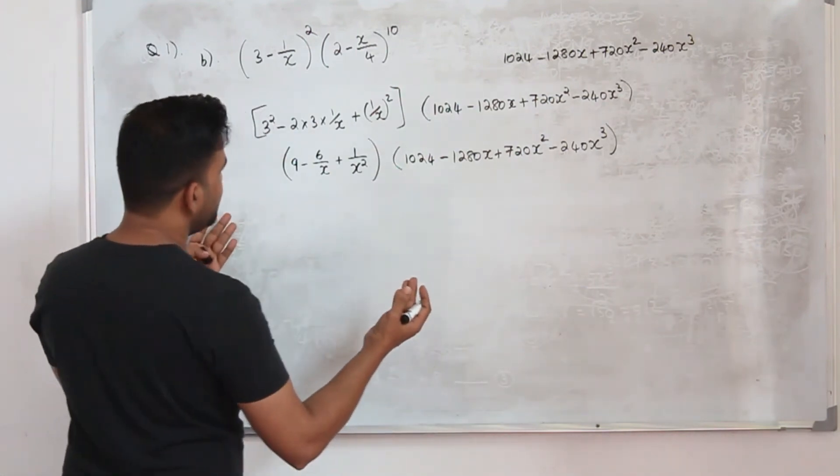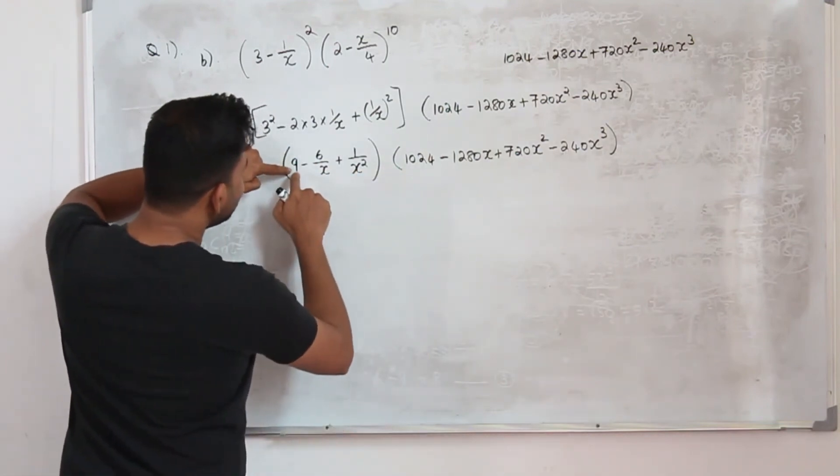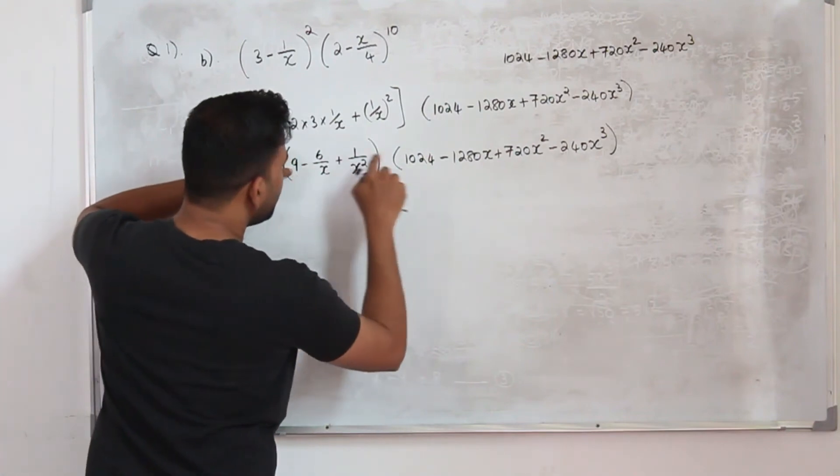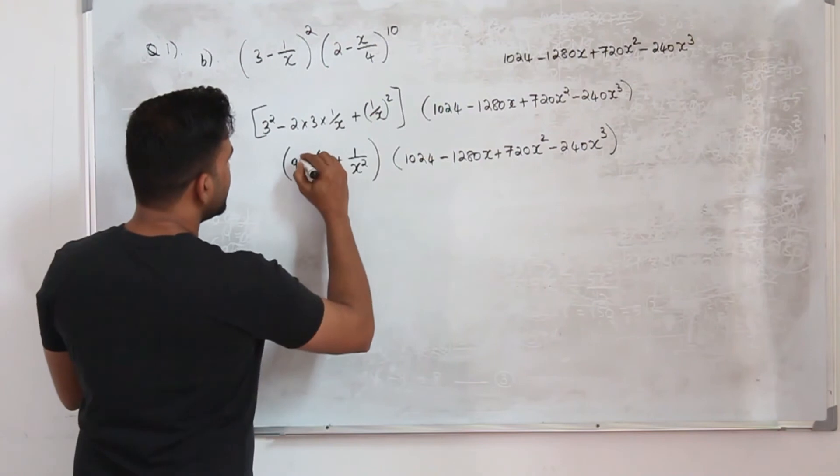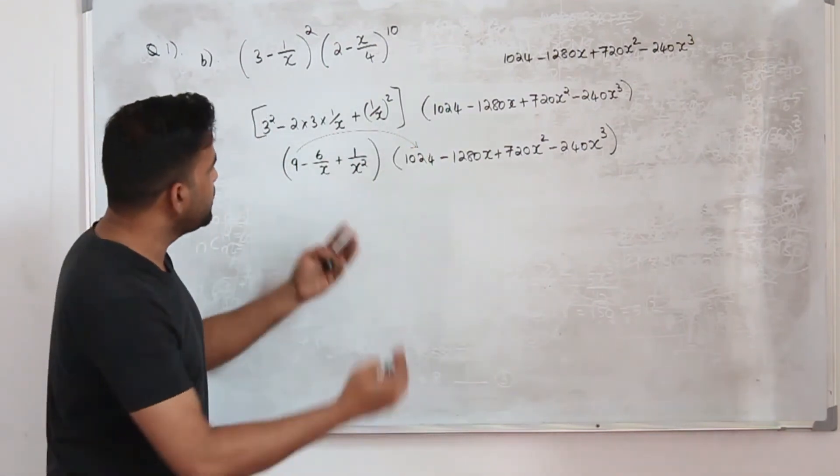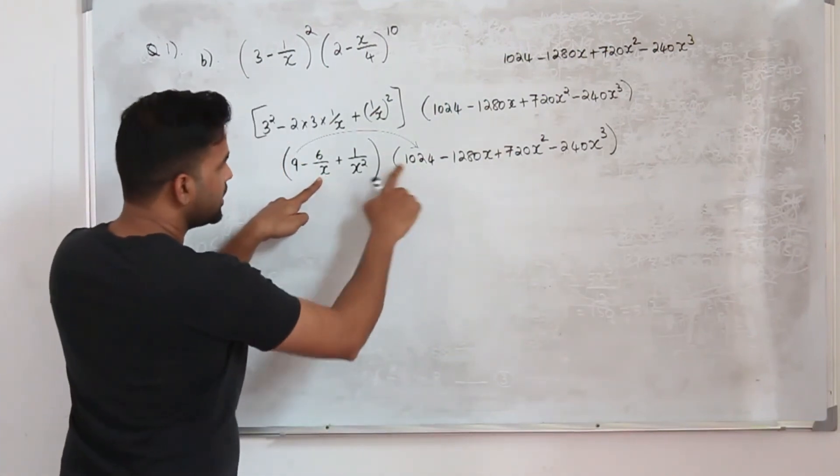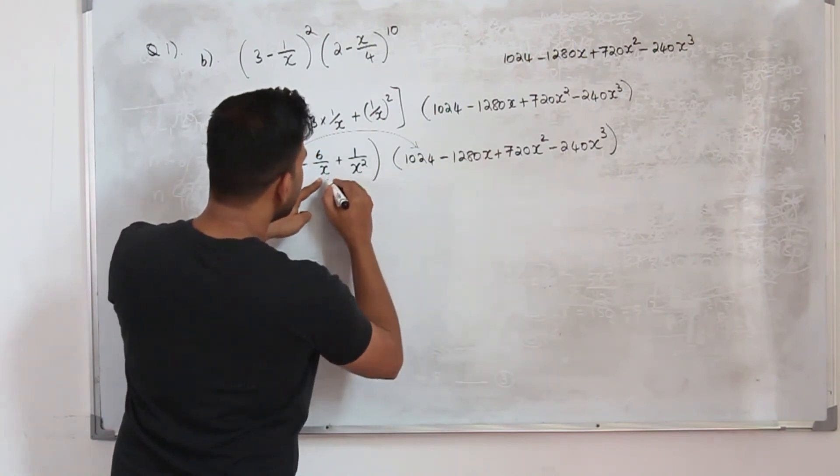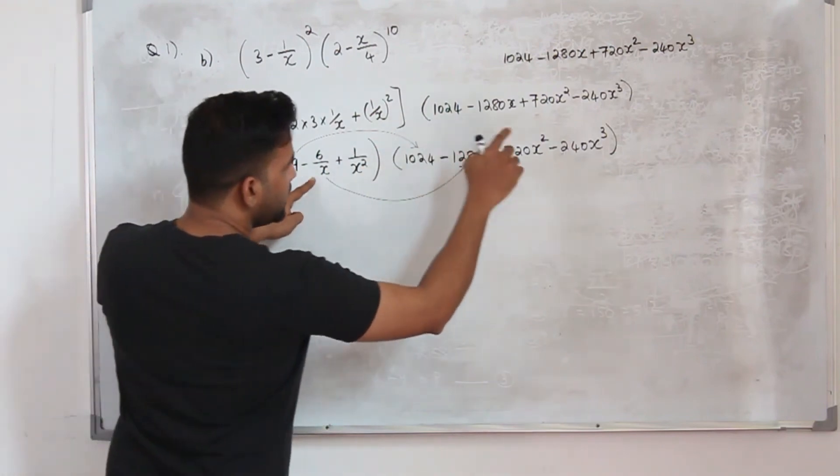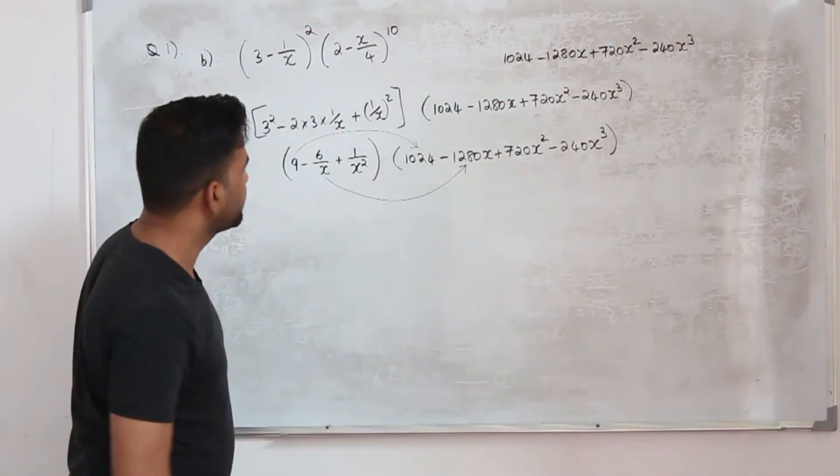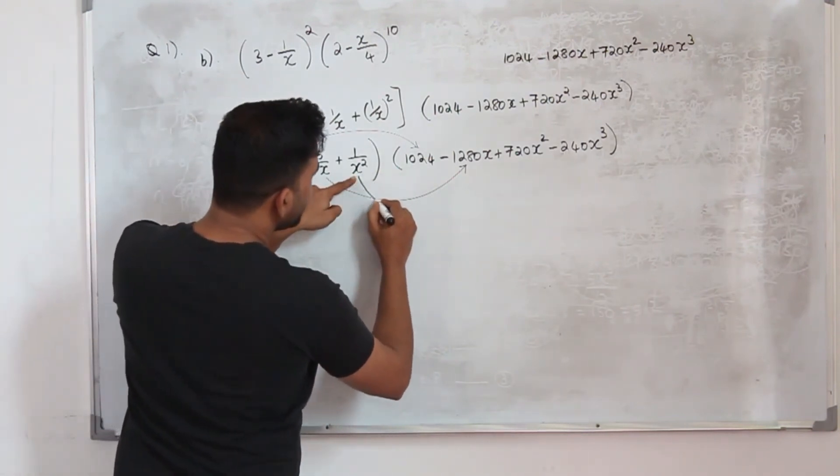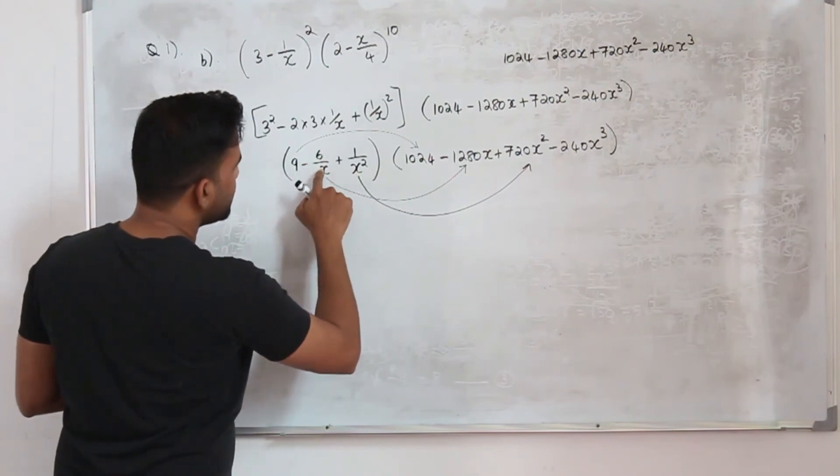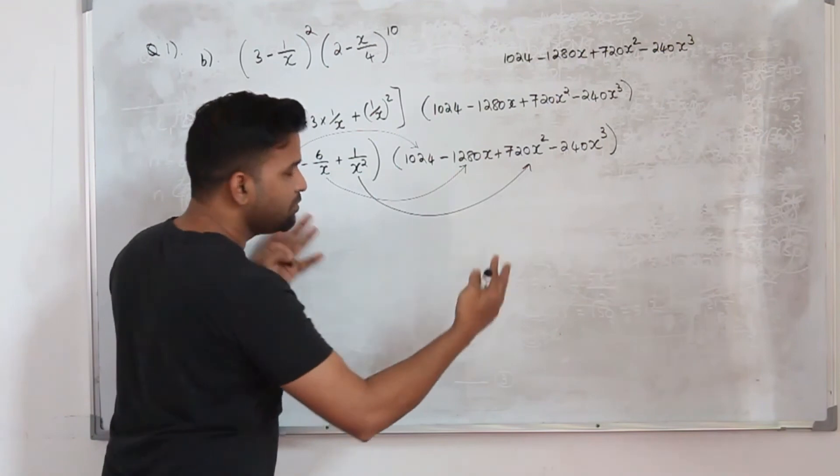Now we need to multiply them and take only the constant term. Before multiplying, just pay attention to each and every term. When you take this 9 and multiply everything, each term will have x in it apart from this term. When you multiply 9 by 1024, that's a constant term. When you pay attention to the second term, when you multiply -6/x by the -1280x term, your x can be cancelled, so you will get a constant term. Again, same goes for 1/x^2. 1/x^2 can be multiplied with the 720x^2 term in order to get a constant term. So you have 3 multiplications: 9 times 1024, -6/x times -1280x, 1/x^2 times 720x^2. And simplify, that is your constant term.